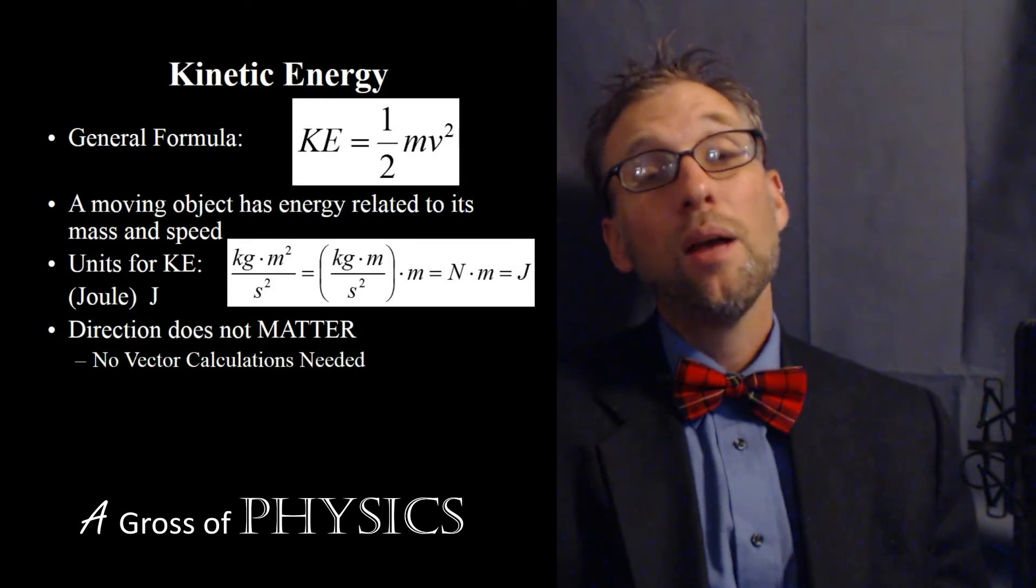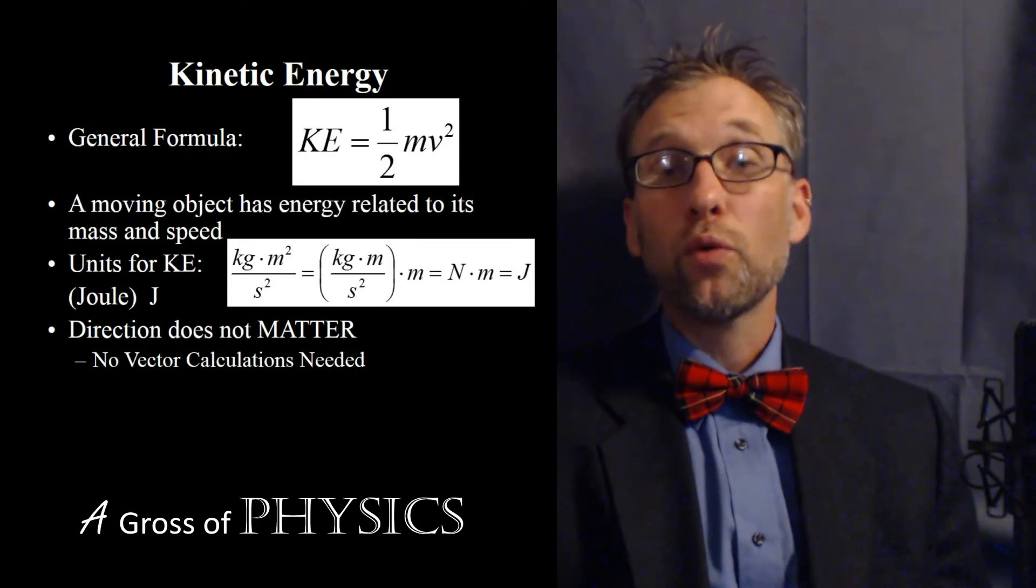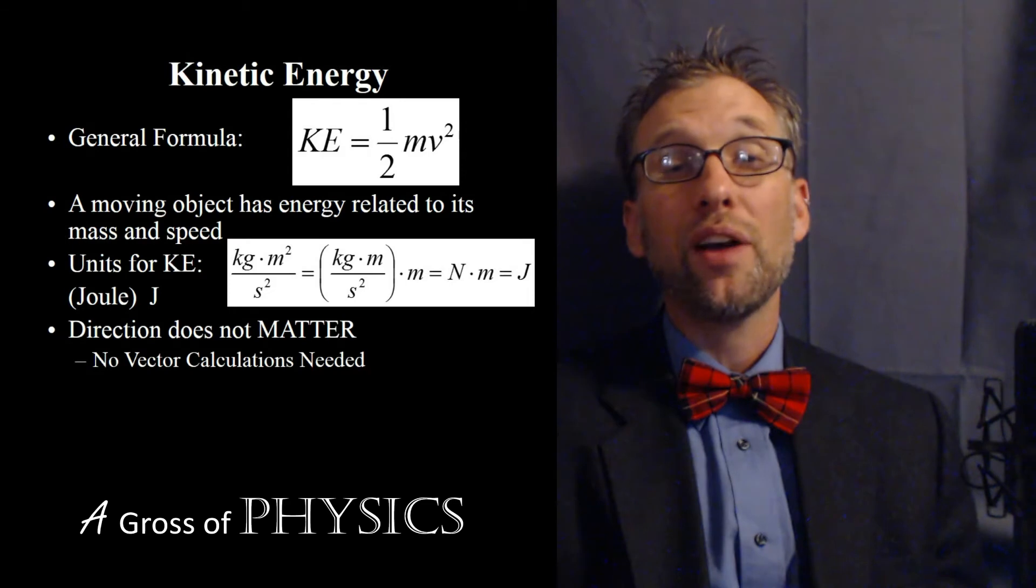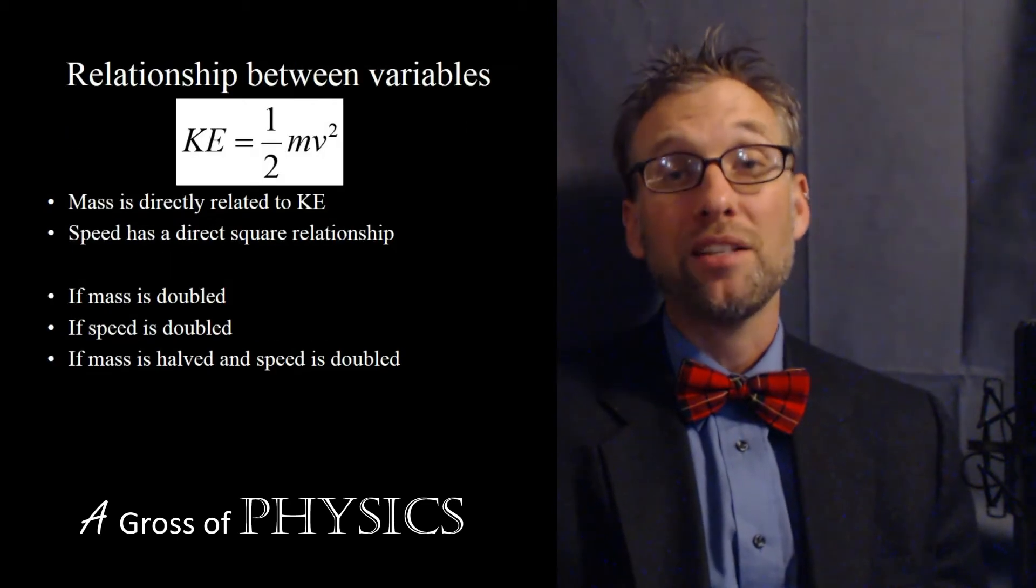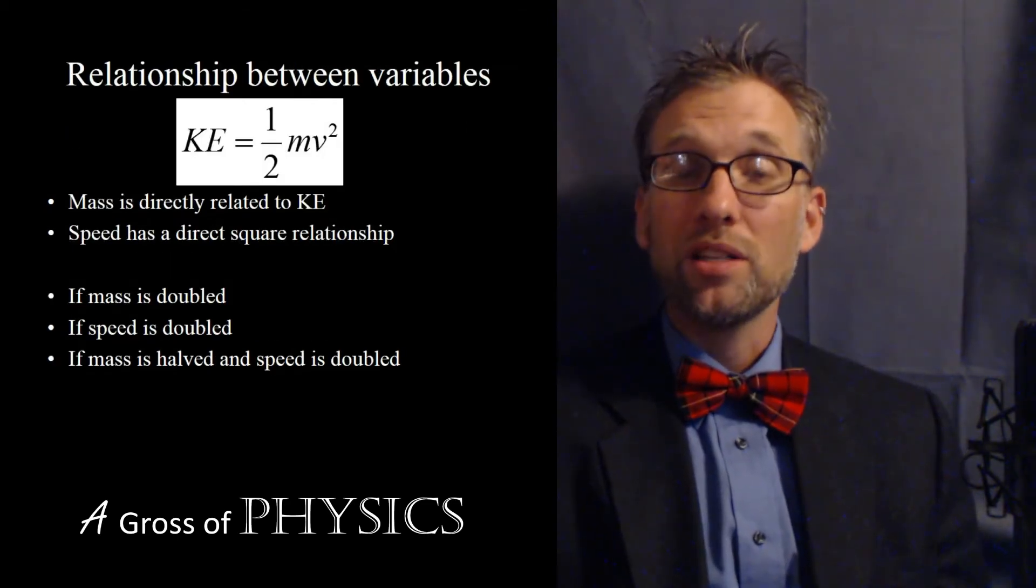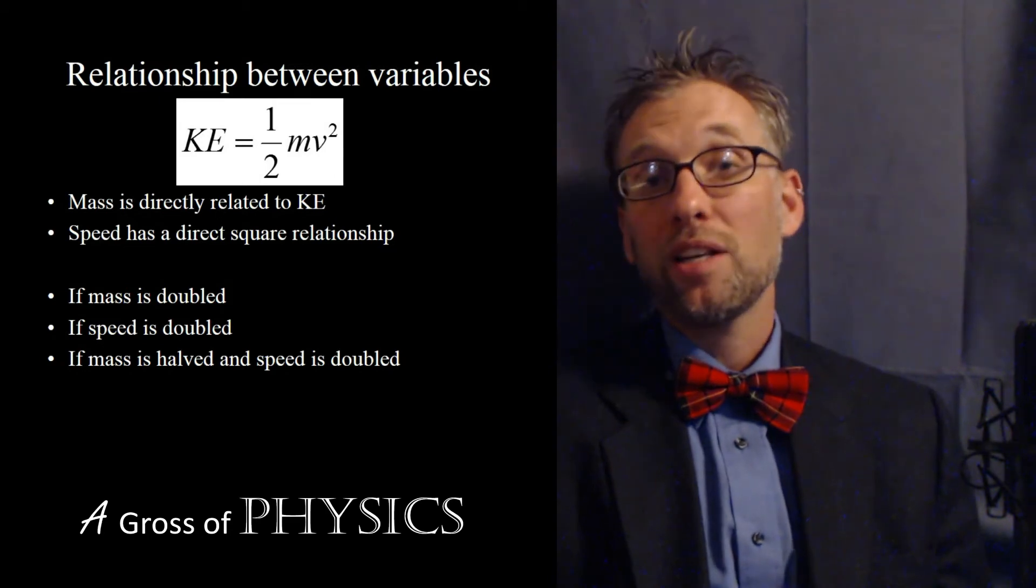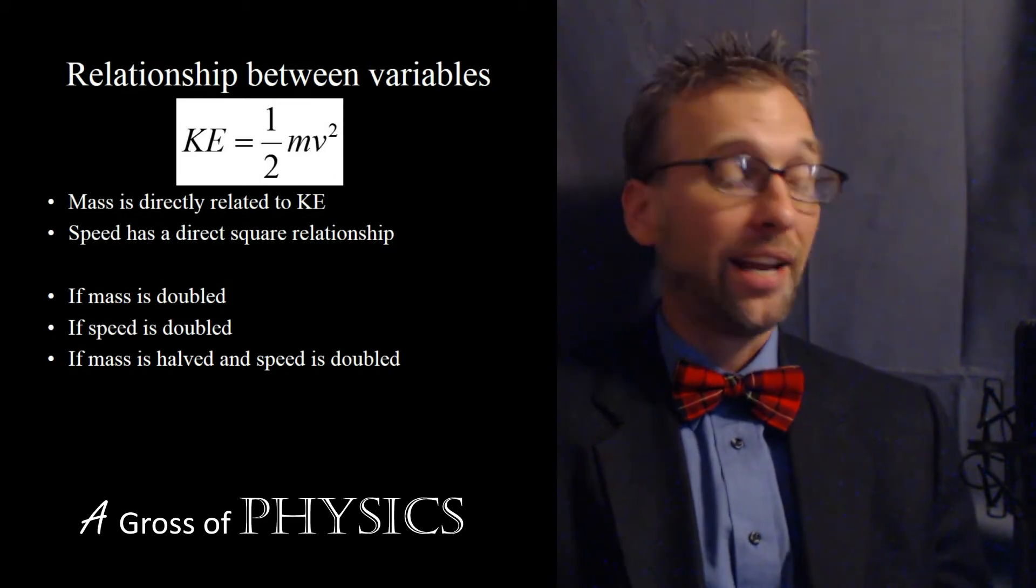We have a theorem called the work energy theorem which allows us to substitute one for the other if there's no friction involved. Because it's speed we don't have to worry about direction, and you can just figure out the kinetic energy of an object based on how fast it's going. All you need to know is the mass of the object and how quickly it's moving and you can figure out the kinetic energy.